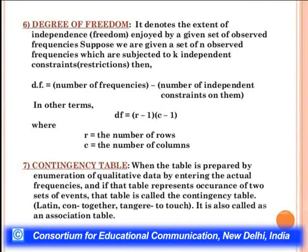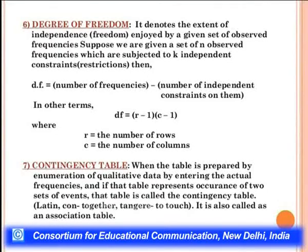When a table is prepared by enumeration of qualitative data by entering actual frequencies, and it represents the occurrence of two sets of events, the table is called a contingency table. From the Latin 'contingere' — meaning 'to touch' — it is also called an association table.